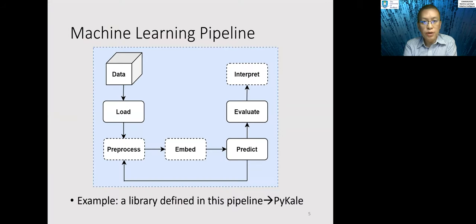So I view machine learning as a standard pipeline. We start with data, and typically we need to load the data from some external source and then pre-process the data to a standard representation. And then we do a kind of embedding to learn a more compact representation and then pass to a predictor so that we can predict some output from the input representation. And then after we do the prediction, we need to evaluate the prediction outcome. And then finally, we need to interpret our prediction outcome or the decision process.